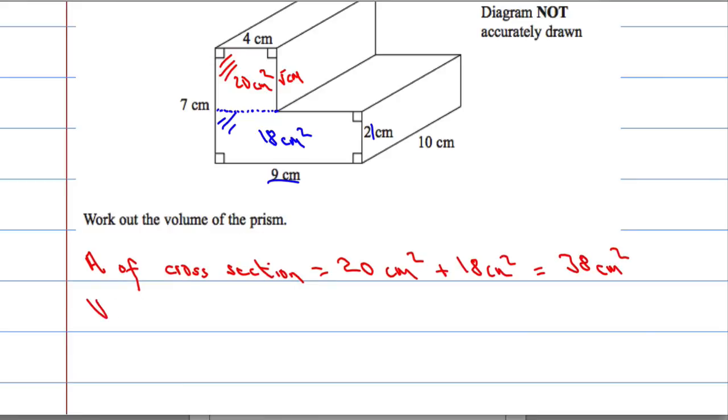Which means the volume is going to equal the area of that cross-section, which is 38, 38 centimeters squared, multiplied by its depth. It goes back 10 centimeters, multiplied by 10 centimeters.